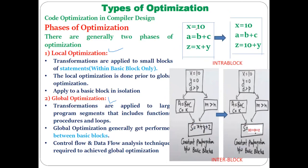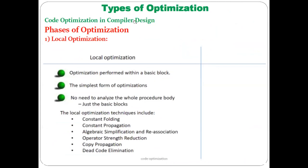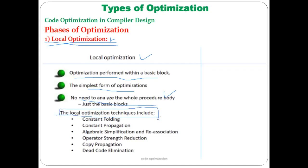Now related to local optimization, there are different techniques. The following techniques come under the category of local optimization: constant folding, constant propagation, algebraic simplification, operator strength reduction, copy propagation, dead code elimination, and common sub-expression elimination.